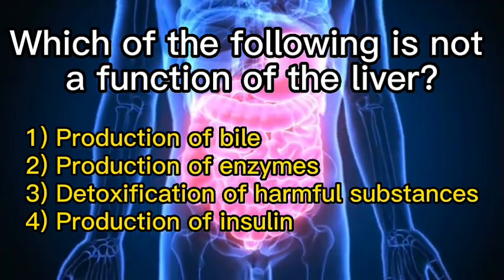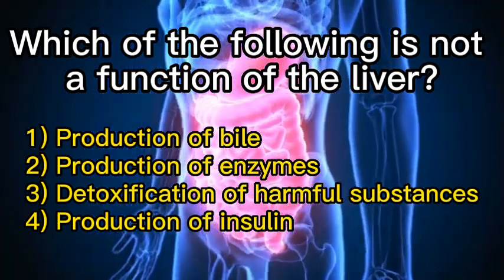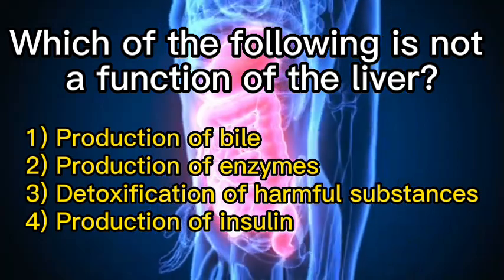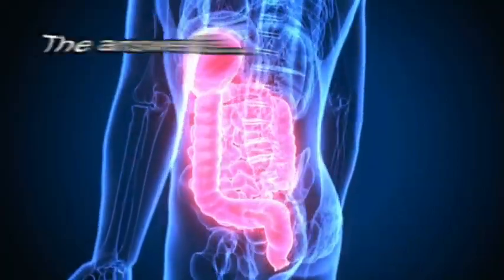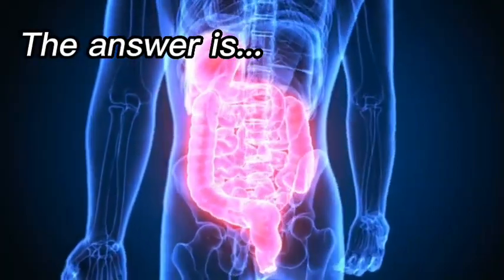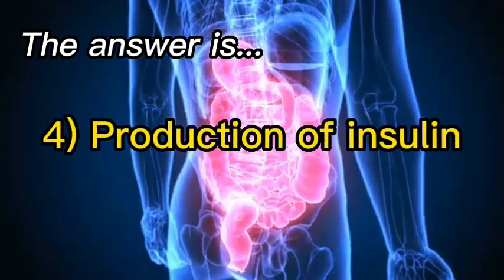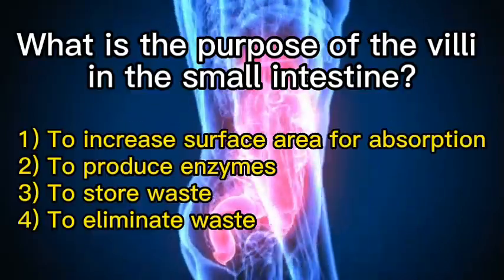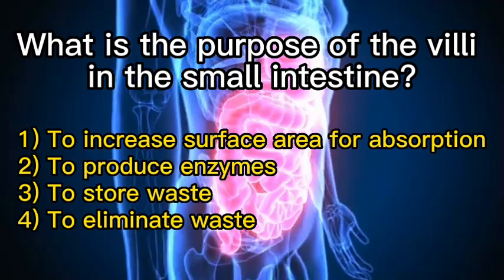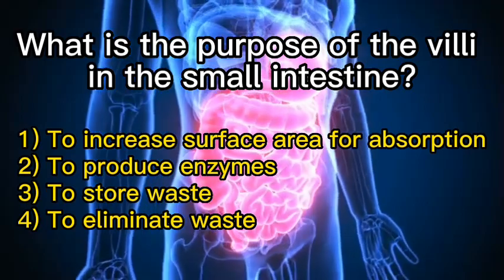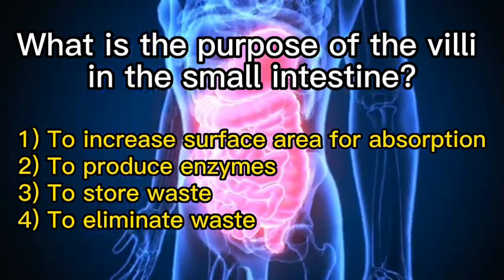Which of the following is not a function of the liver? One: production of bile. Two: production of enzymes. Three: detoxification of harmful substances. Four: production of insulin. The answer is four, production of insulin.